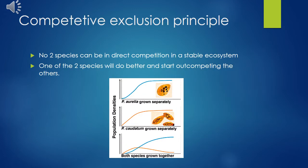In biology we have what is called the competitive exclusion principle: you cannot have two species in direct competition in a stable ecosystem. If two species compete for exactly the same resource, one will do better and start outcompeting the other — we sometimes see this when introduced species come to a habitat and outcompete the original species. As we saw with the barnacles, one species may choose a different location, but if two species occupy the same location competing for the same thing, the competitive exclusion principle states that one will be outcompeted.